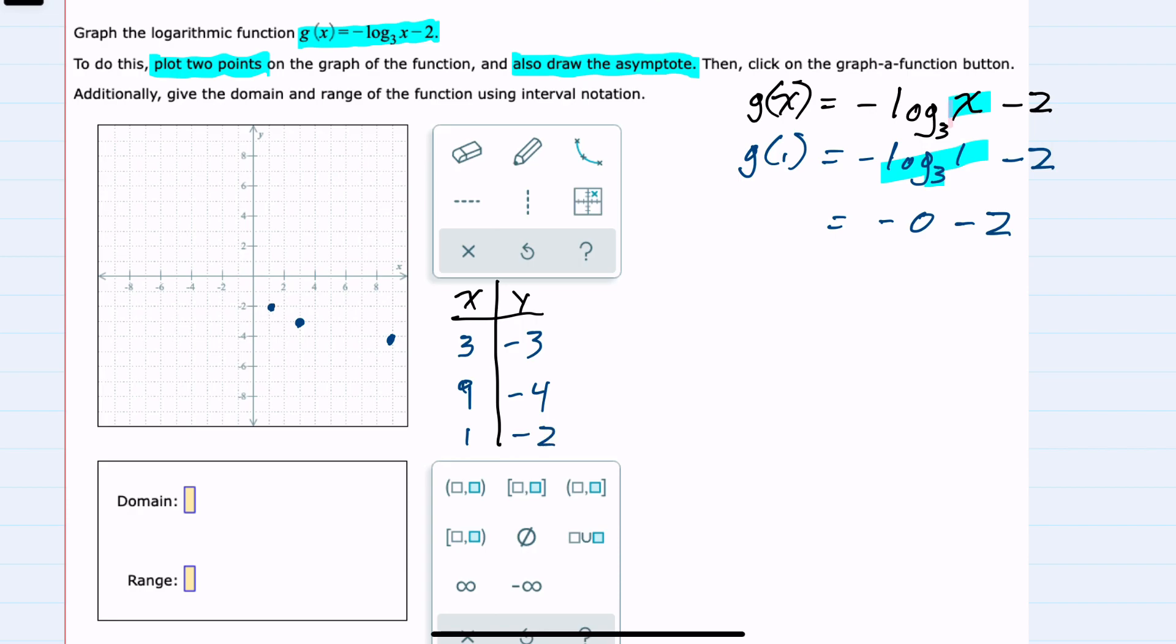We know that x cannot be equal to a negative number, so we can't take the log of a negative or 0. So we are starting to approach negative values asymptotically. Our asymptote is the line x equals 0.